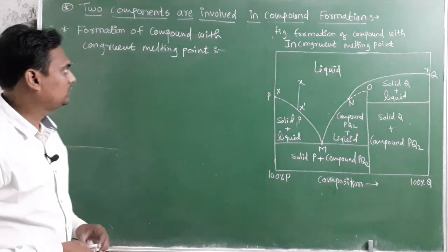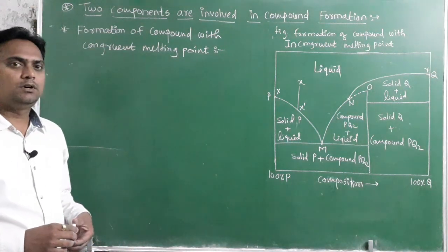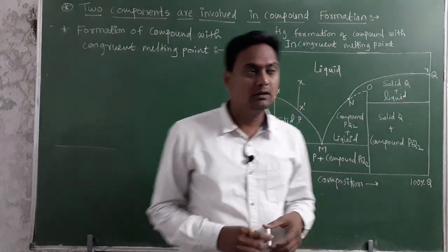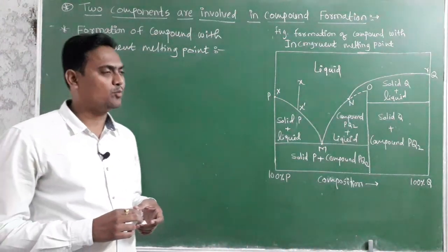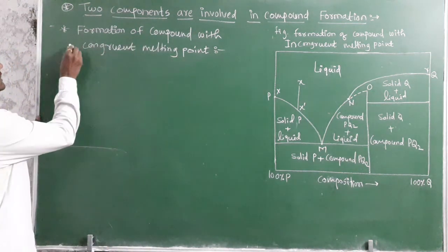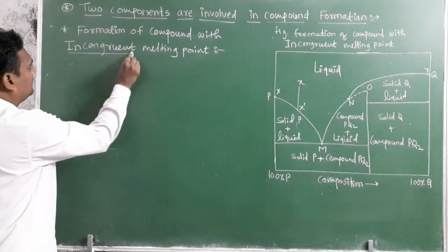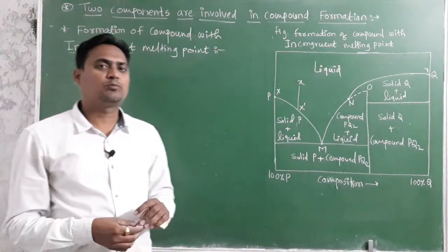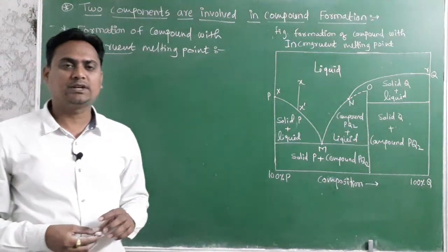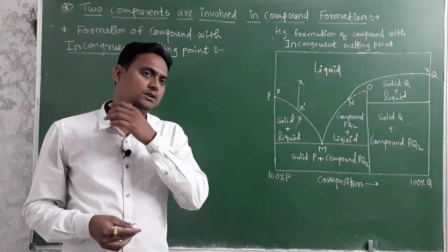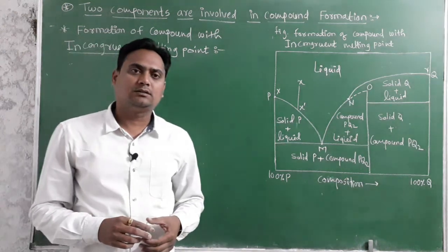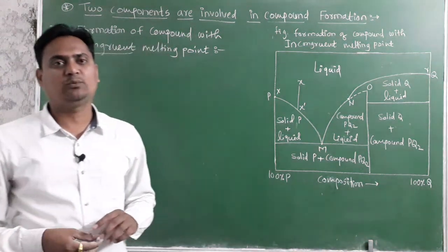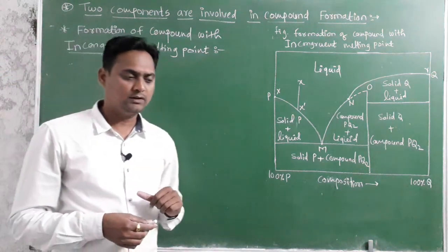Welcome. Let us continue the topic — two components involved in compound formation. In the previous lecture we discussed the phase diagram for formation of a compound with a congruent melting point. Today we are going to discuss the formation of a compound with an incongruent melting point. In the case of a congruent melting point, two components react together and form a stable intermediate compound, which on heating is converted into liquid, and the composition of the liquid and the composition of that solid intermediate are the same. The temperature at which that intermediate melts is called the congruent melting point.